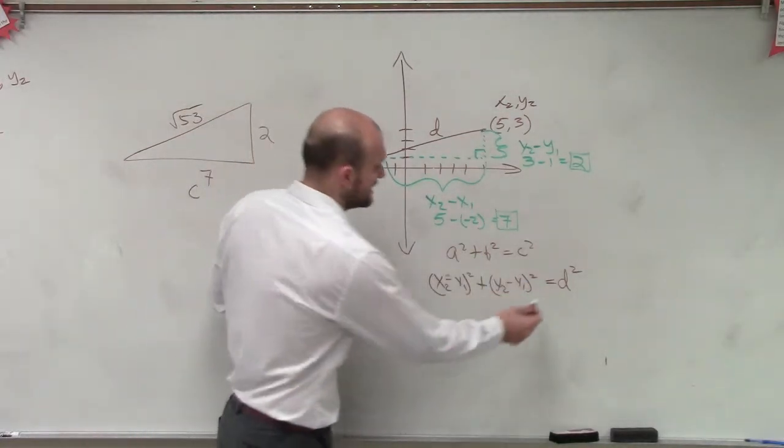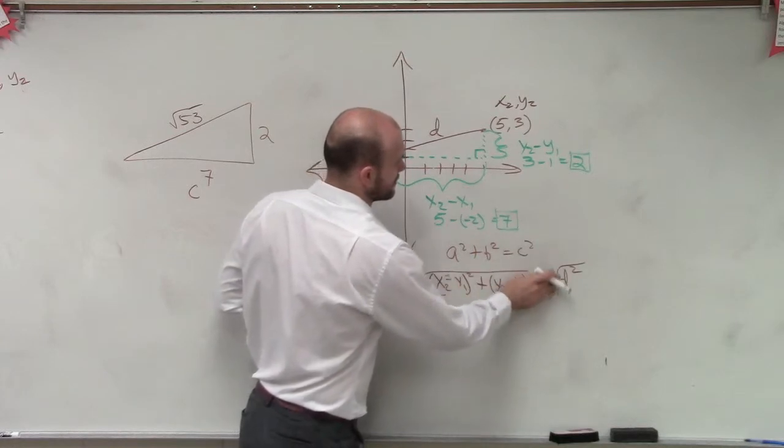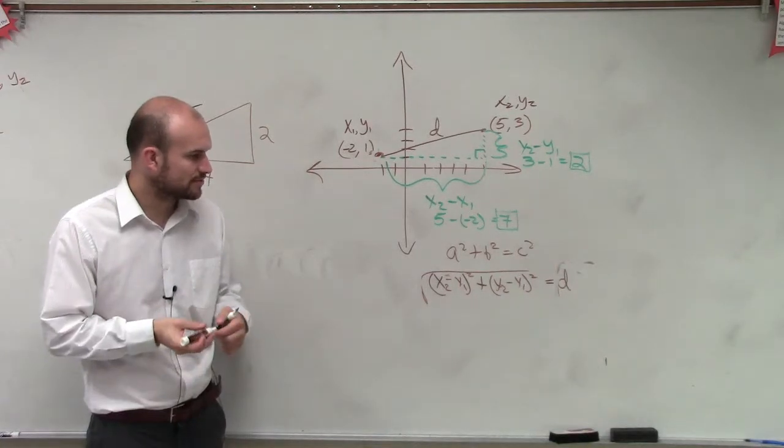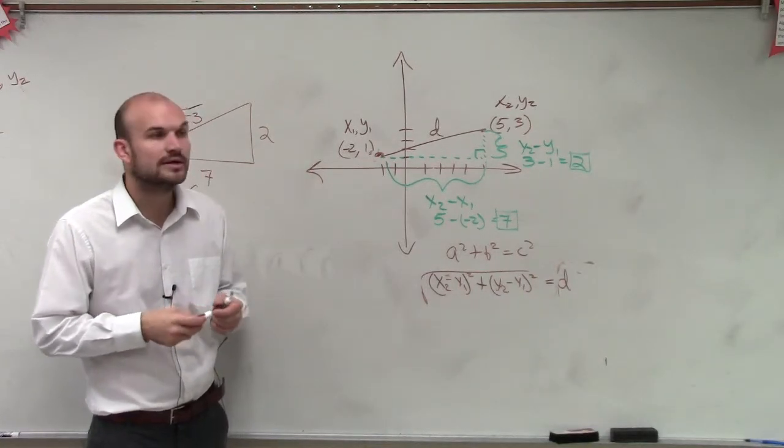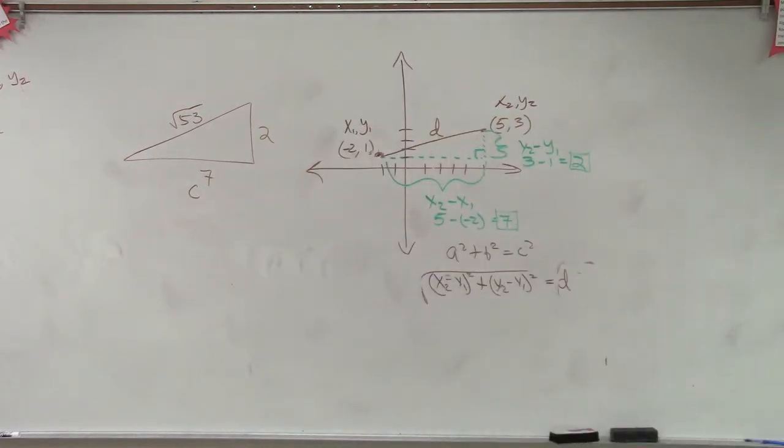Then if I actually just want to find out what d is, I take the square root of both sides. And therefore, the distance formula is the square root of x2 minus x1 squared plus y2 minus y1 squared equals d. Quick little review. Does that help?